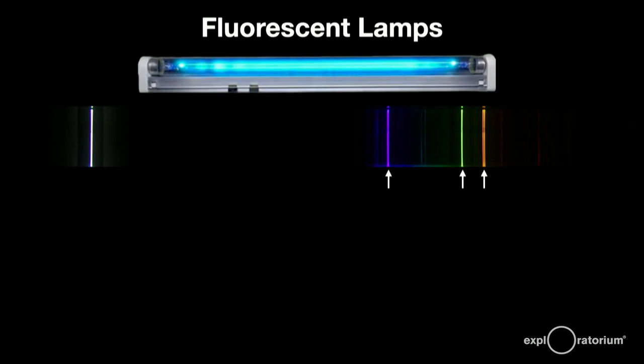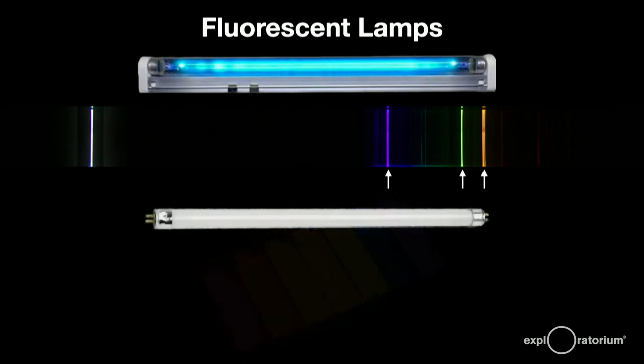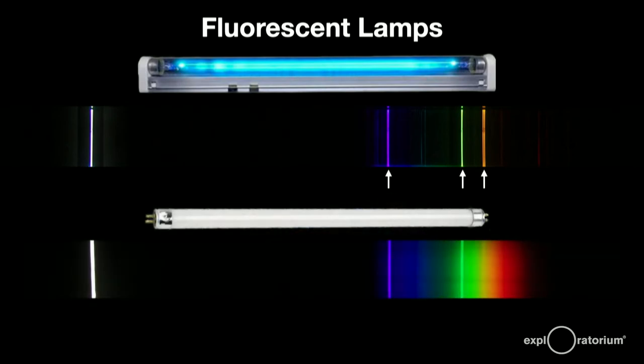The powders on the inside surface of a regular fluorescent tube is a combination of phosphors like these. They glow when hit by the ultraviolet light of the excited mercury. The colors of the phosphors produce and combine to make the white light of the lamp. If you look at its spectrum, you'd still see the yellow, green, and violet light from mercury, but also the light from the phosphors that fill in the spectrum to make white light.